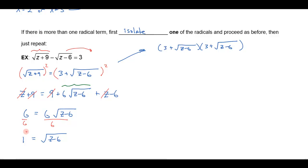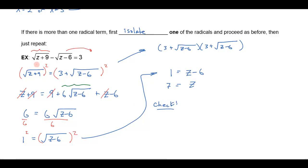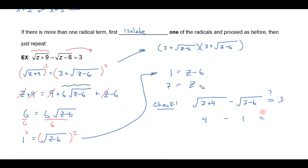Then I can just square both sides again. When I do that, I'll get 1 is equal to z minus 6, and z is equal to 7. If I plug in z equals 7, I would get the square root of 7 plus 9 minus the square root of 7 minus 6, and I want to see, does that equal 3? Well, 7 plus 9 is 16, square root of 16 is 4, 7 minus 6 is 1, square root of 1 is 1, and 4 minus 1 does equal 3. So that checks out and my solution is just z equals 7.